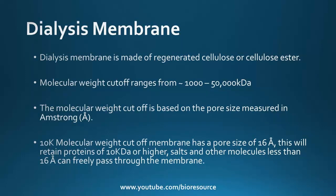The dialysis membrane is made up of regenerated cellulose or cellulose ester, and the molecular weight cutoff ranges from around 1,000 to 50,000 kilodaltons. The molecular weight cutoff is based on the pore size measured in angstroms. For example, a 10k molecular weight cutoff membrane has a pore size of around 16 angstroms and will retain proteins of 10 kDa or higher. Salts and other molecules smaller than 16 angstroms can freely pass through the membrane, while the protein, being higher molecular weight, cannot pass through and is retained.